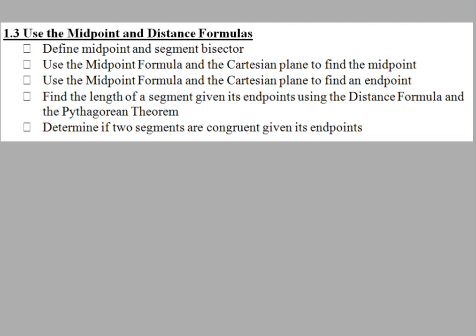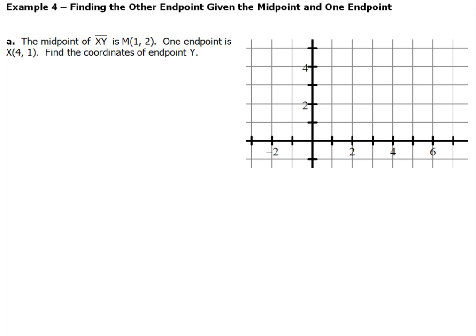Now when we take a look at this kind of problem, this is the type of problem that is going to drive some people crazy. But really, you're going to think about it — I'm going to teach you to think about it. I've got a midpoint that I'm given and they give us the coordinates for it. In this case the coordinates are at (1, 2), so I'm going to go ahead and plot that midpoint. And then the one endpoint that they give me has coordinates of (4, 1), so I'm going to plot that point — in this case point X.